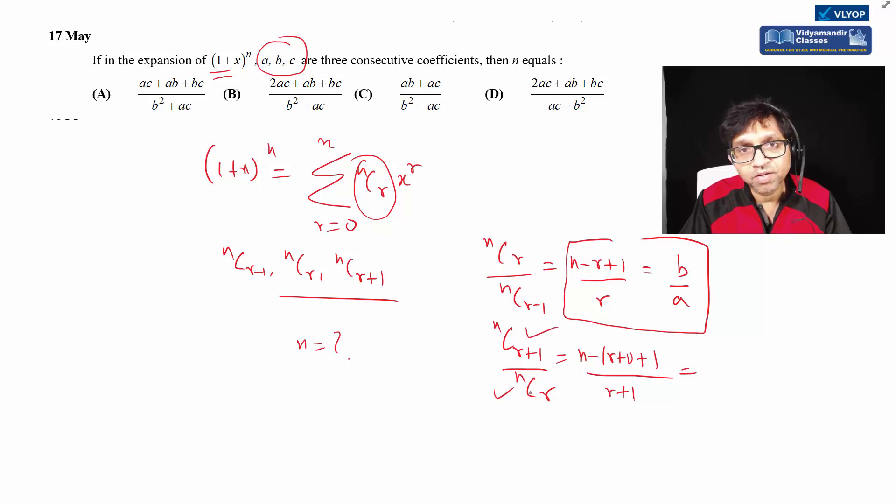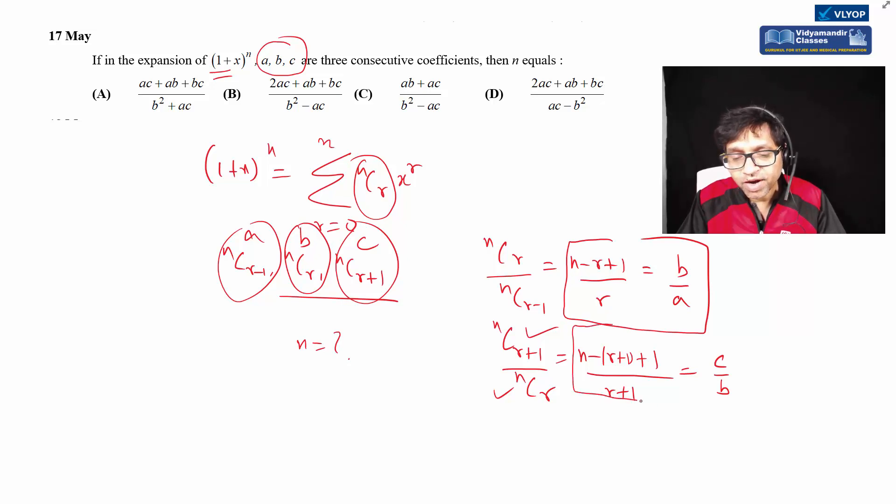First term, second consecutive term, third term. This gives us C/B, because in the given equation this is A and B and this is C. From these two equations we have to eliminate r and find n in terms of A, B, C. The question is straightforward - two equations, eliminate r.